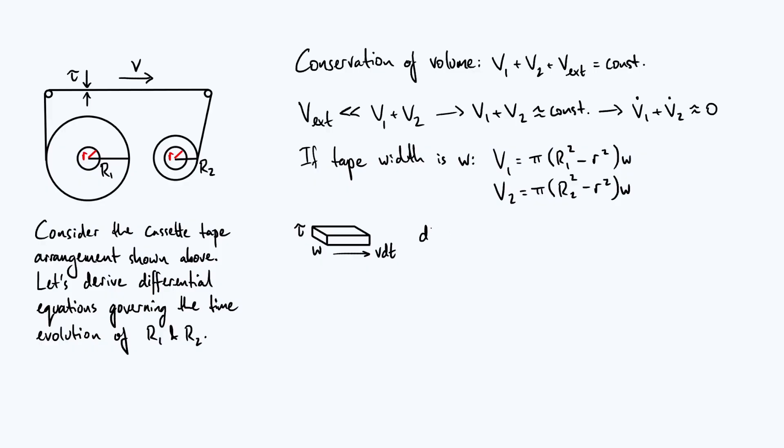And therefore, the amount of volume, let's call it dV, is just going to be the three sides of the cuboid multiplied together. We're going to get v times τ times w times dt.